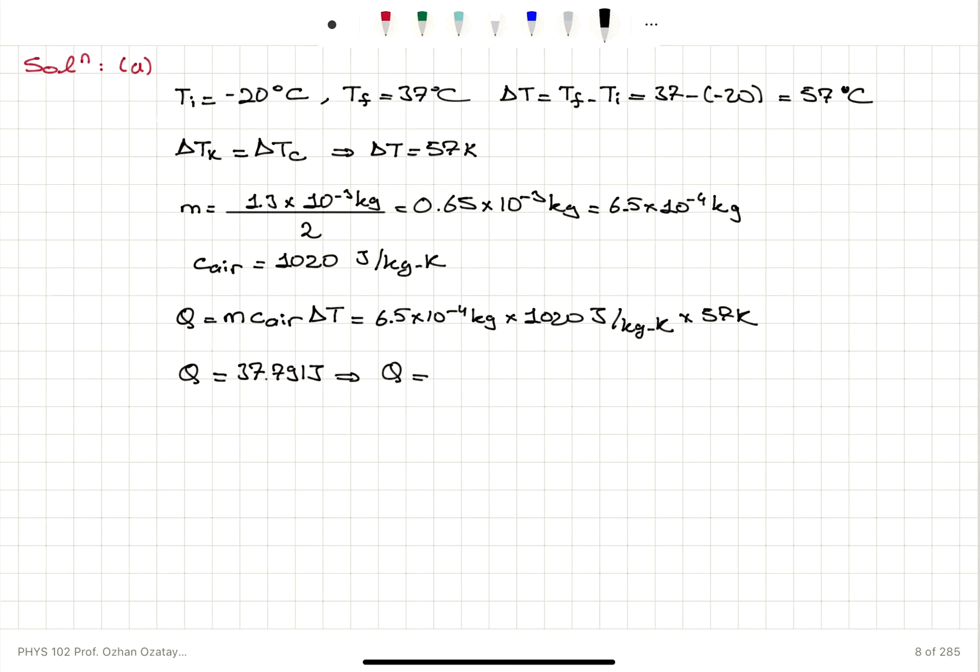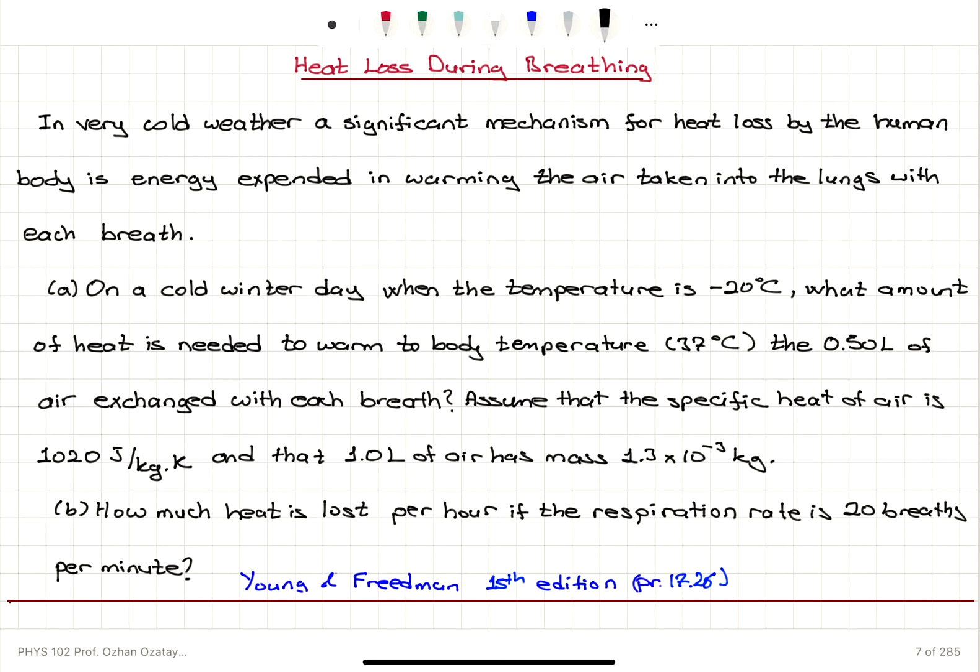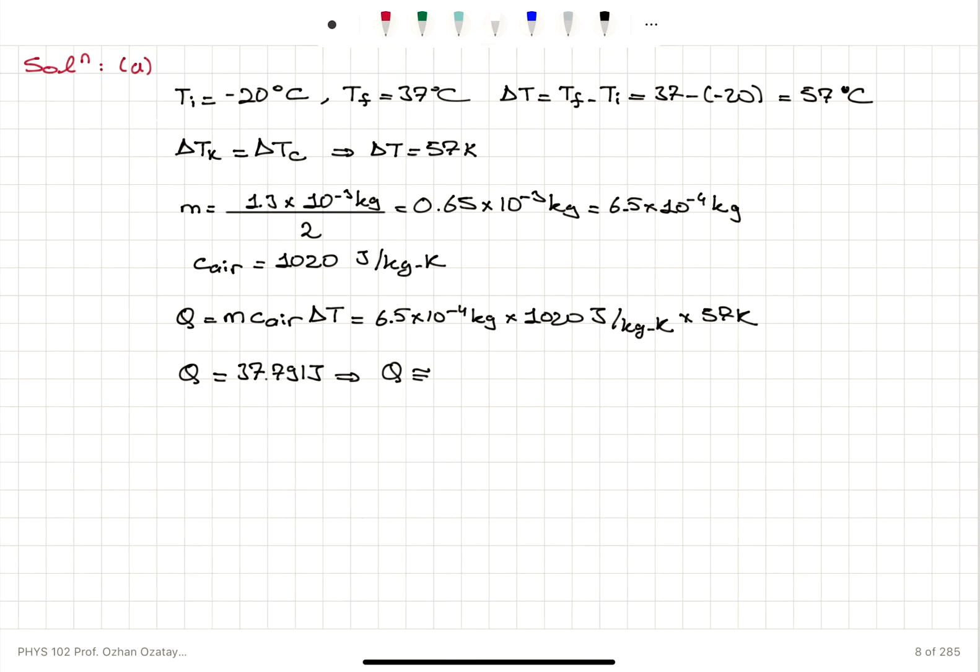How should we report this heat? We're going to do rounding. The least number of significant figures we have in this problem statement is 2, so we're going to reduce it to 2 significant figures, so Q is 38 joules. We can also convert it to calories. 1 calorie is 4.186 joules of mechanical energy, so heat will be 37.791 divided by 4.186, and then reduced to 2 significant figures, Q will be 9.0 calories.